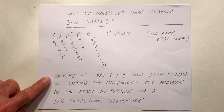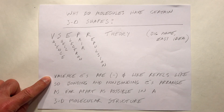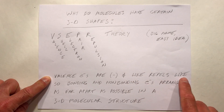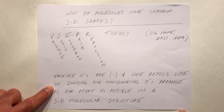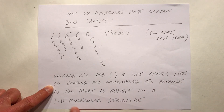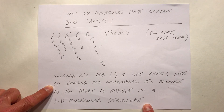Valence electrons are negatively charged, and we know from the law of electrostatics that like charges repel. So bonding and non-bonding electrons arrange as far apart as possible in a three-dimensional molecular structure. That's our theory.